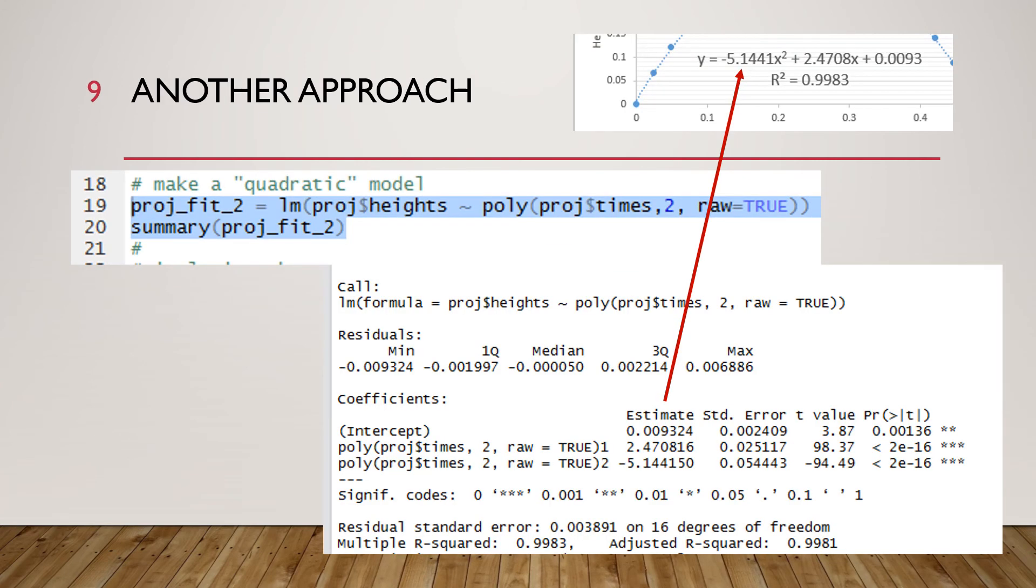R has another way to fit to a polynomial that I'm showing here in line 19. So I'm using proj underscore fit underscore 2 equals lm, the linear model function in R open parenthesis, and then it's y's tilde x's. So the y's were proj dollar sign heights and then the tilde and instead of just having a simple x proj dollar sign times, we use this poly method, p-o-l-y open parenthesis, and then our variable proj dollar sign times comma a 2 to say that we want a polynomial of order 2, that's a quadratic.